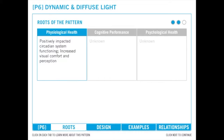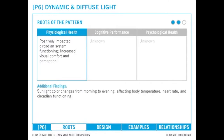Recent research has focused on illuminance fluctuation and visual comfort, human factors and perception of light, and impacts of lighting on the circadian system functioning. Sunlight changes color from yellow in the morning, to blue at midday, to red in the afternoon and evening. This affects body temperature, heart rate, and circadian functioning.